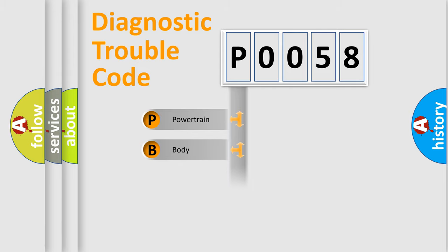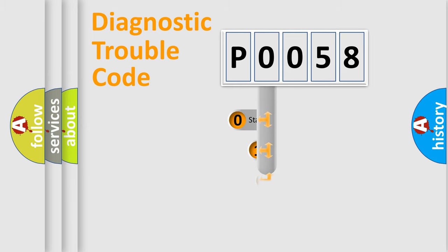Powertrain, body, chassis, network. This distribution is defined in the first character code.